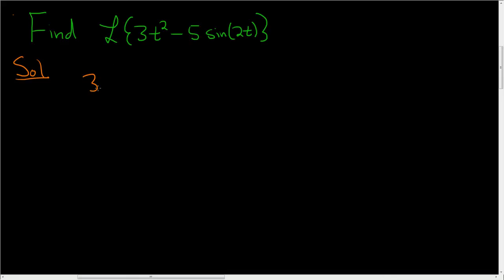This is equal to 3 times the Laplace of t squared minus 5 times the Laplace of sine 2t. Basically, you can pull the numbers out, right? That's what it means to be linear. And you can compute the Laplace of each instead of just doing it all at once.